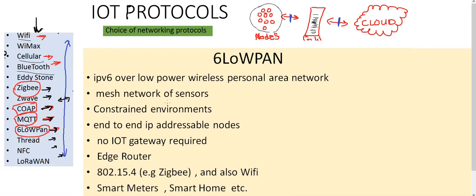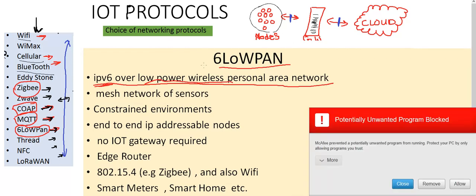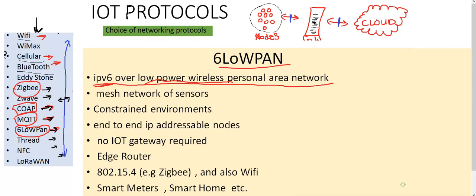6LoWPAN actually is an acronym for IPv6 over low power wireless personal area network. So 6LoWPAN stands for IPv6 over low power wireless personal area network. 6LoWPAN is actually low power wireless implementation of the internet combined with IPv6 IP addressing.